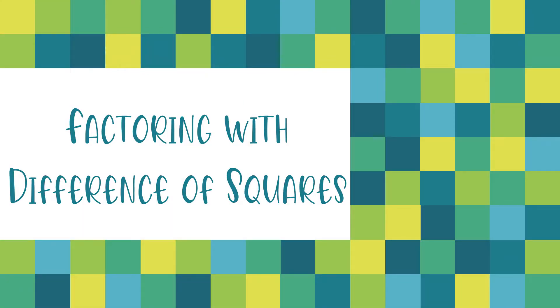Greetings everyone. Today we're going to explore factoring with difference of squares. Now let's pay attention to those two key words. Difference means we're going to be subtracting. Squares means perfect squares, like 2 times 2 is 4, 9 times 9 is 81.